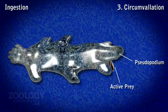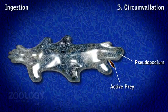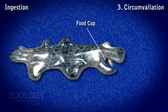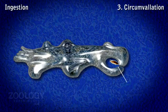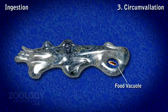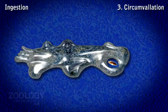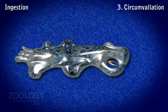3. Circumvaliation: In this method, amoeba proteus engulfs an active prey like ciliate or flagellate. Amoeba forms out pseudopolia around the prey with a cup-like structure called food cup. The pseudopolia are not in intimate contact with the prey during engulfment. The opening of food cup constricts, leaving a pore which soon closes. In this way, a non-contractile food vacuole is formed with the prey in a considerable amount of water.